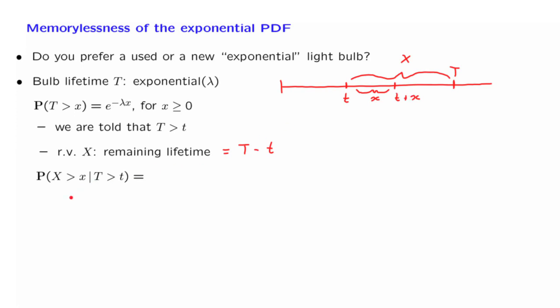We use the definition of conditional probabilities to write this expression as the probability that capital X is bigger than little x. On the other hand, capital X is T minus t, so we write it this way: T minus t is bigger than little x, and also that T is bigger than little t, divided by the probability of the conditioning event.